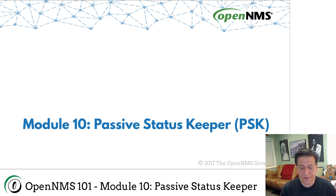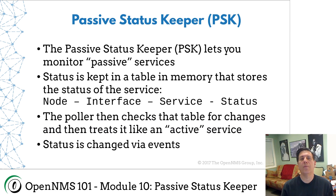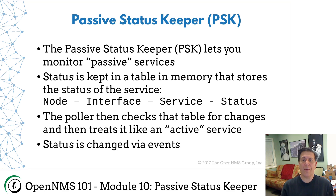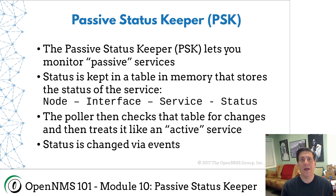So the Passive Status Keeper — what is it? Well, we were approached many years ago by a company that did television transmission in Australia. It's a big television company in Australia, and of course they used a lot of satellites. The problem was satellites don't necessarily have IP addresses; they're not able to get information out of them. So our normal method of service assurance, the active poller — where we actually go out and test something on the network — failed in this scenario.